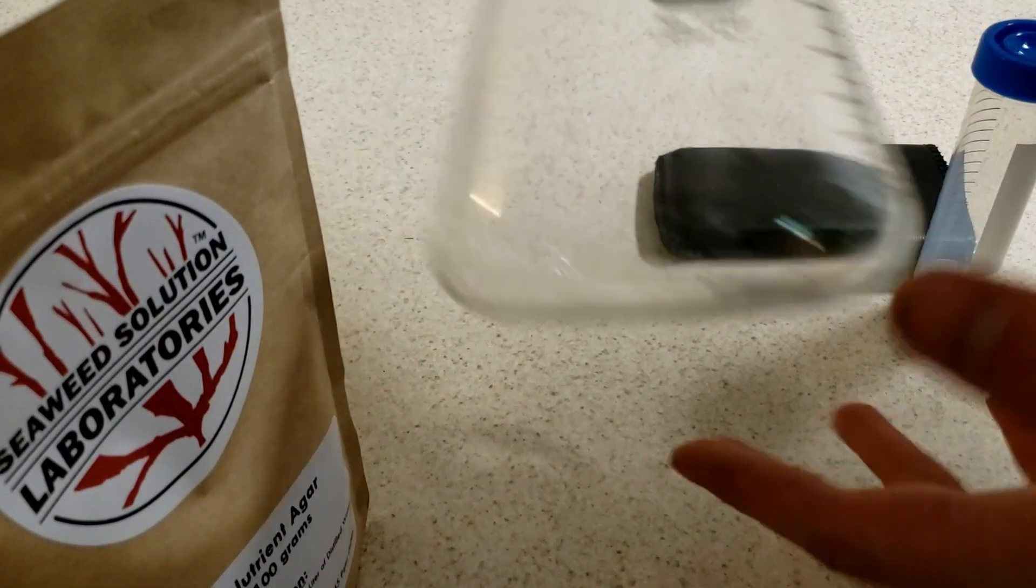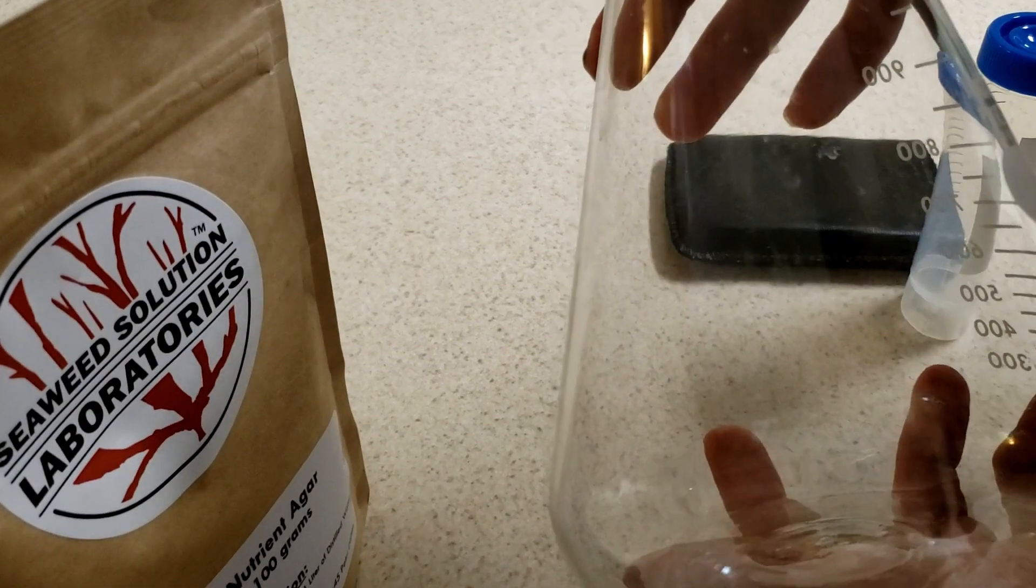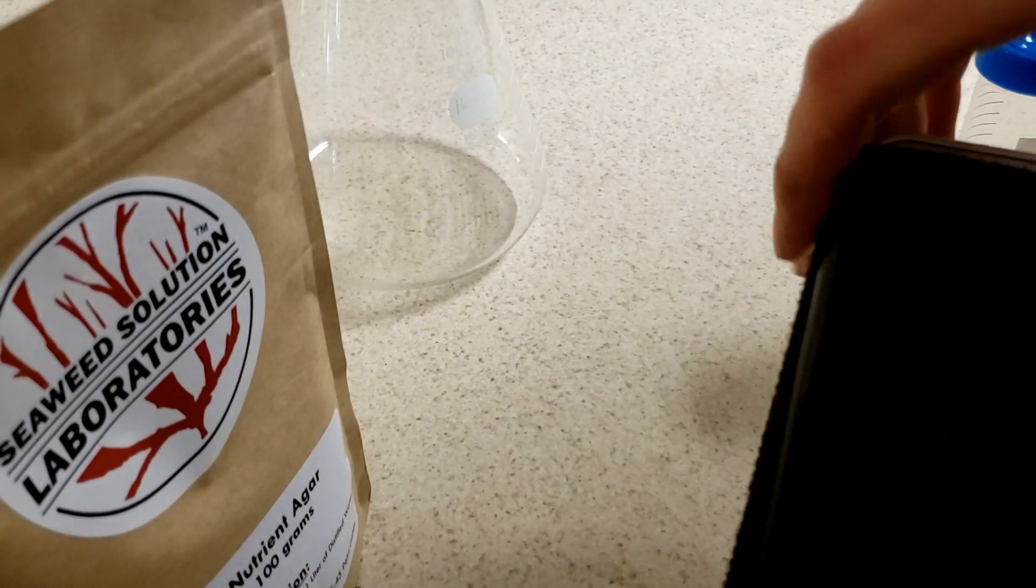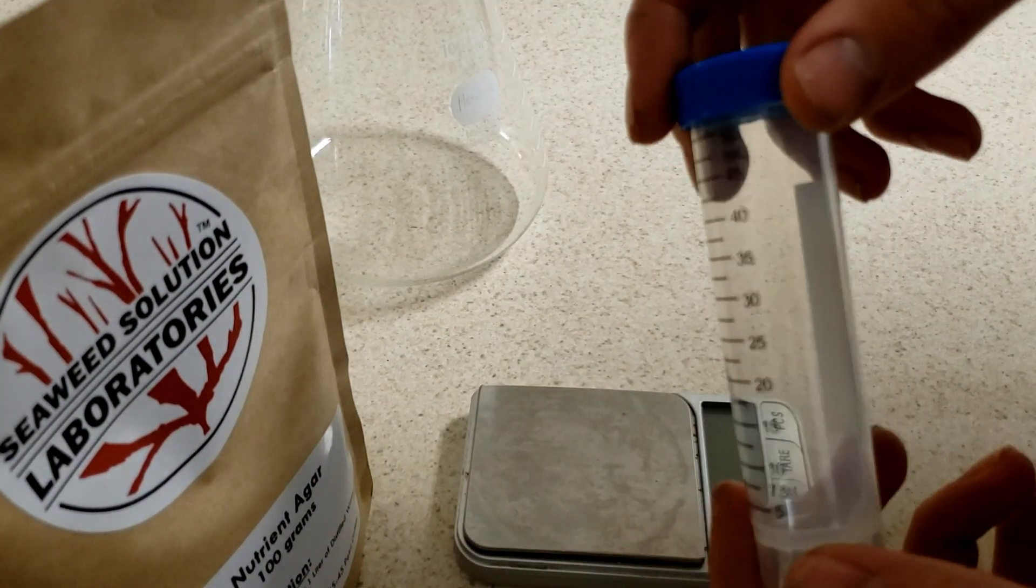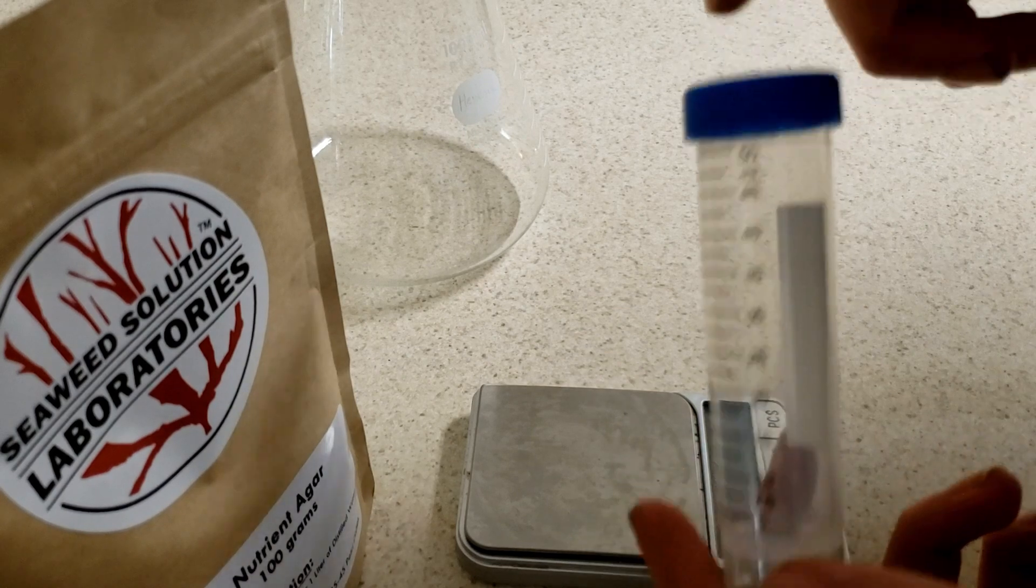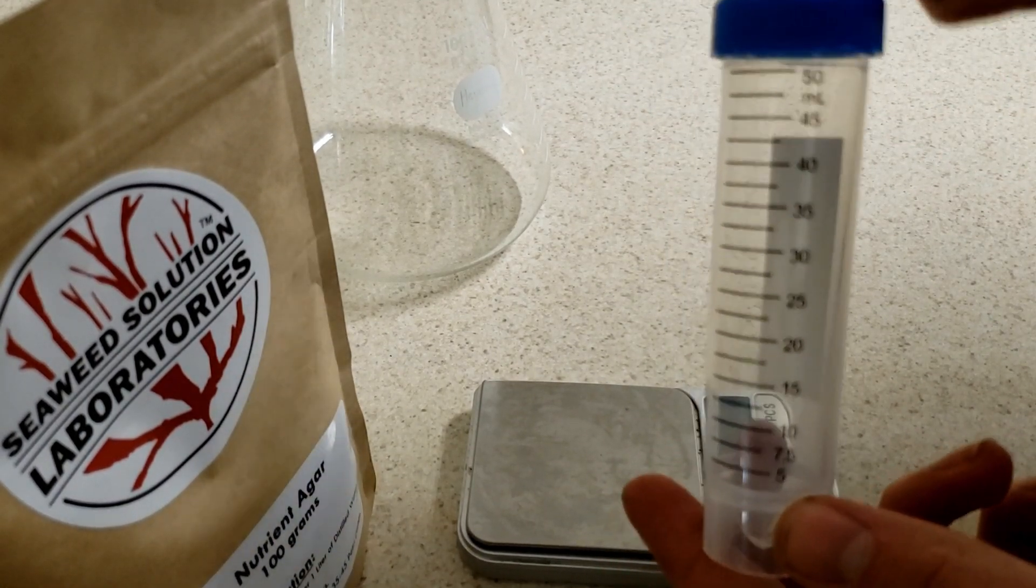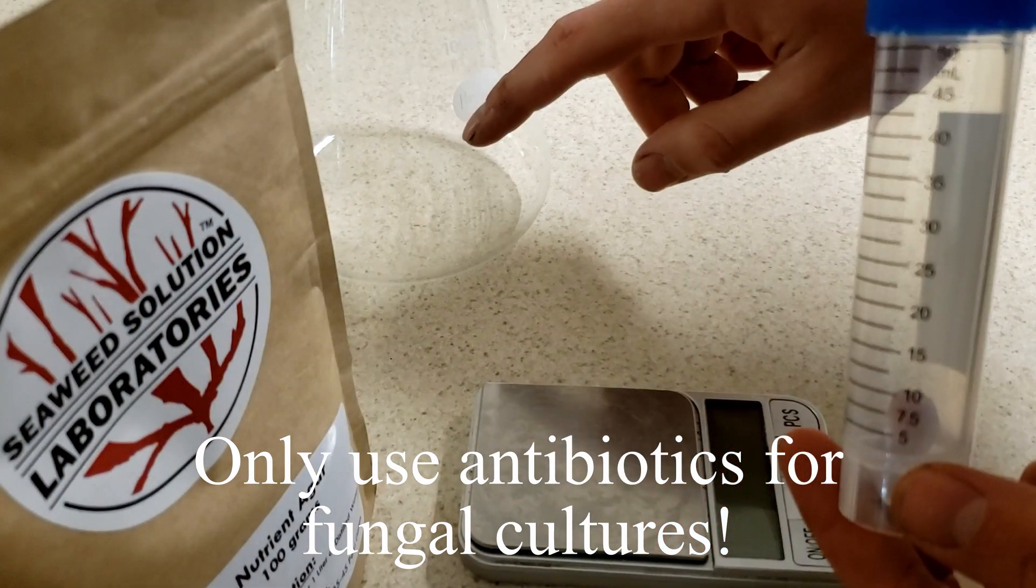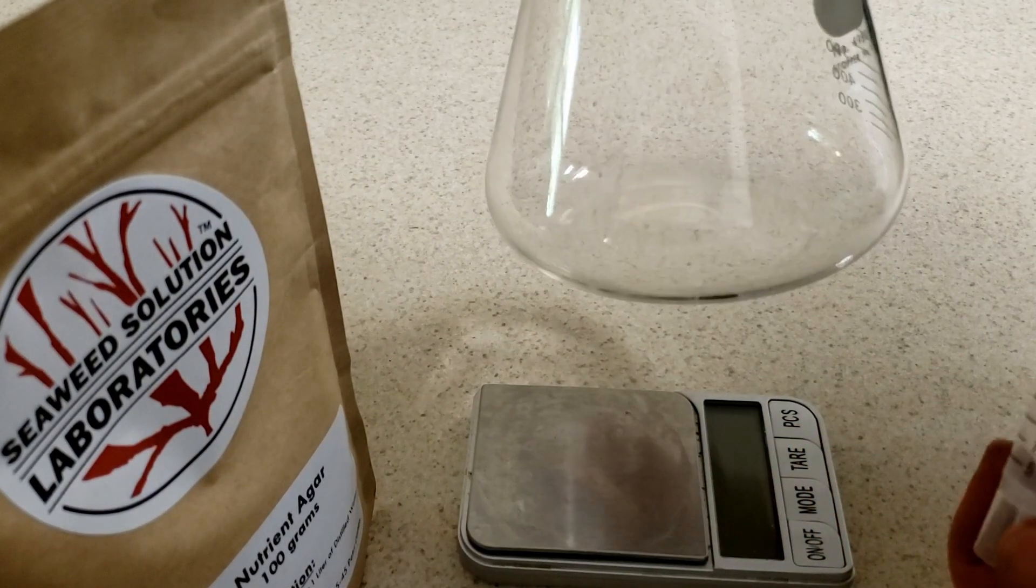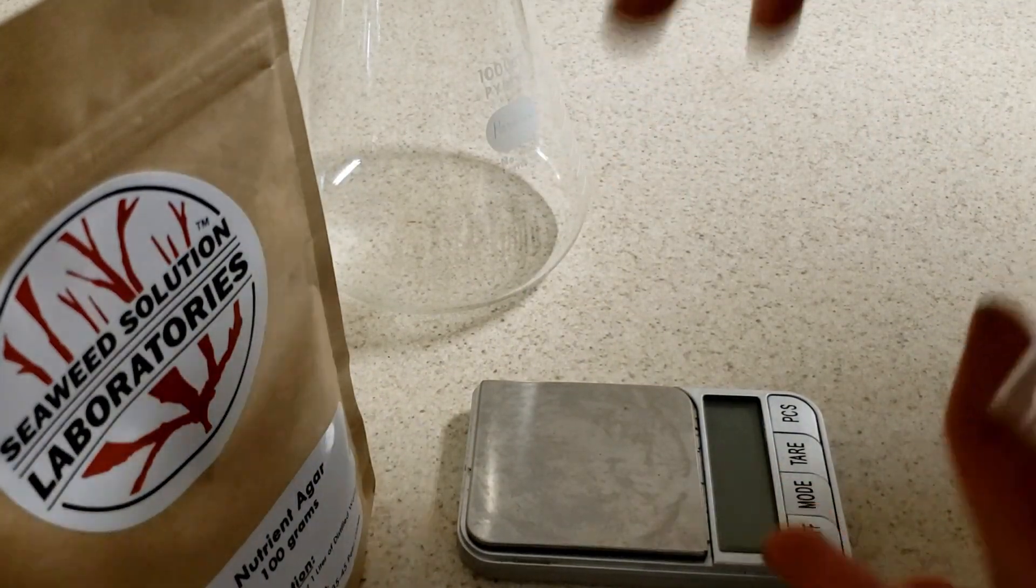The other thing we're going to need is just a container to sterilize our agar solution in. We're going to need a scale, and I'm using this test tube in order to sterilize some water. So what we're going to do with the sterilized water is once it cools, we're going to add antibiotics to it, because we can't add the antibiotics directly to the flask before we sterilize it because high temperatures will destroy the antibiotics.